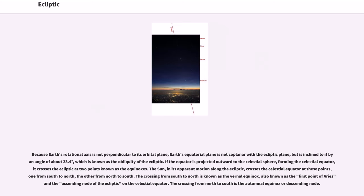Because Earth's rotational axis is not perpendicular to its orbital plane, Earth's equatorial plane is not coplanar with the ecliptic plane, but is inclined to it by an angle of about 23.4 degrees, which is known as the obliquity of the ecliptic. If the equator is projected outward to the celestial sphere, forming the celestial equator, it crosses the ecliptic at two points known as the equinoxes. The Sun, in its apparent motion along the ecliptic, crosses the celestial equator at these points, one from south to north, the other from north to south. The crossing from south to north is known as the vernal equinox, also known as the first point of Aries and the ascending node of the ecliptic on the celestial equator.